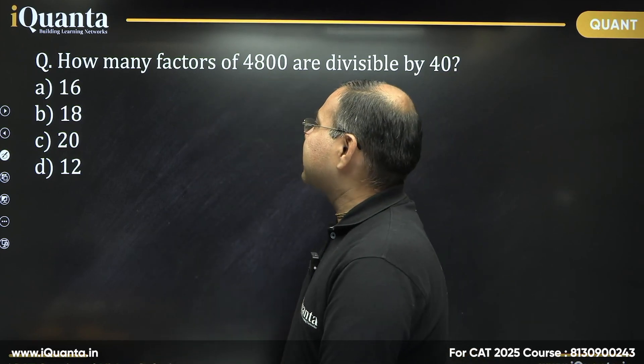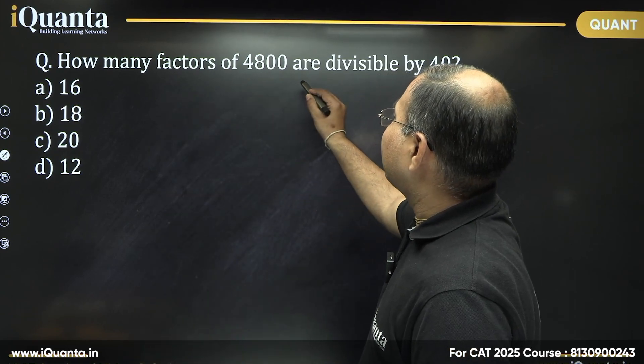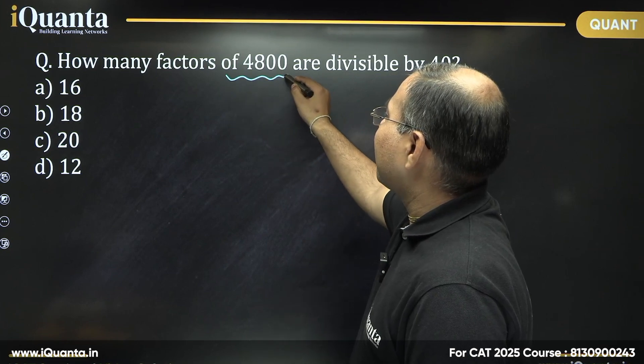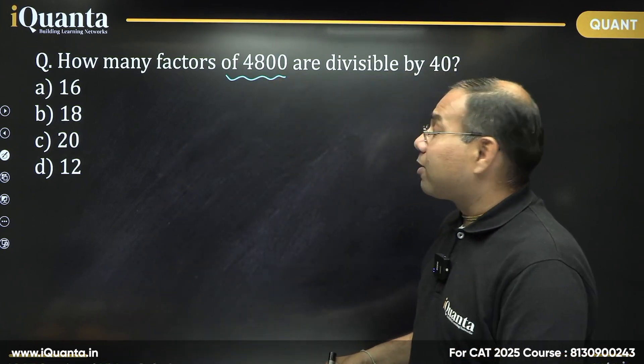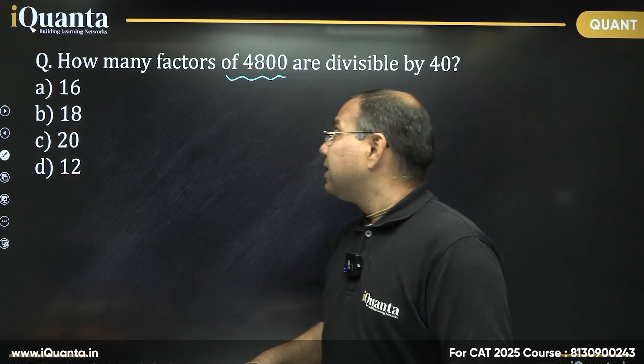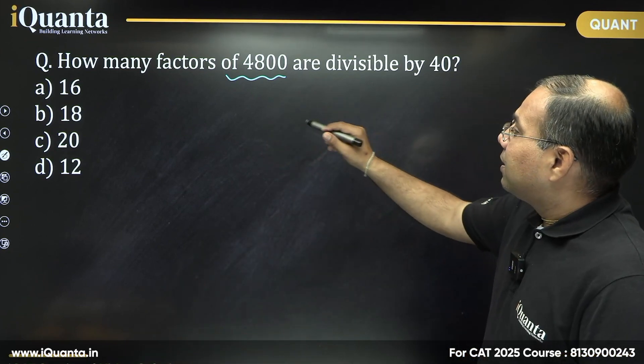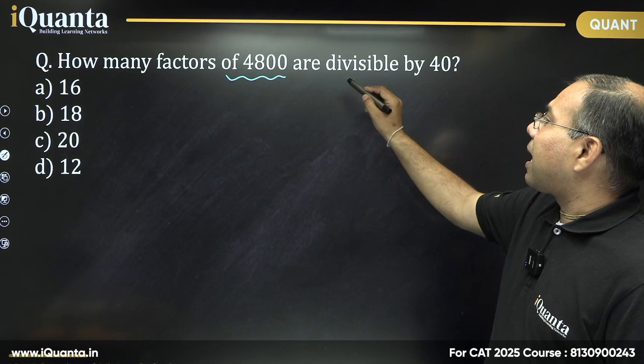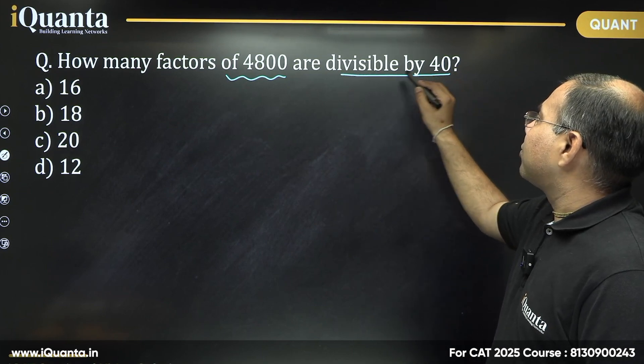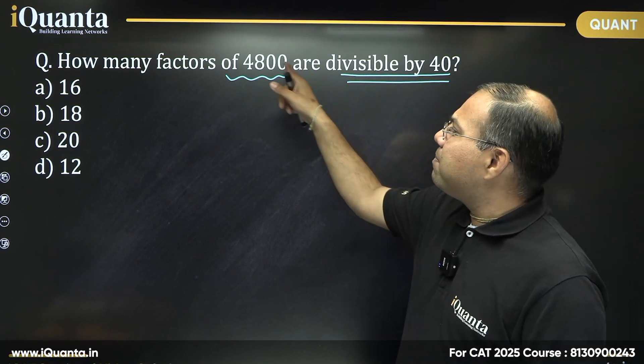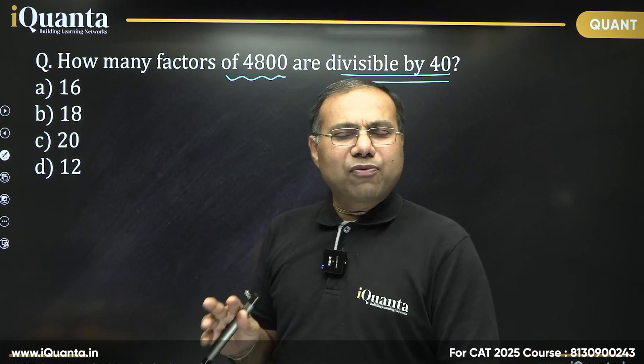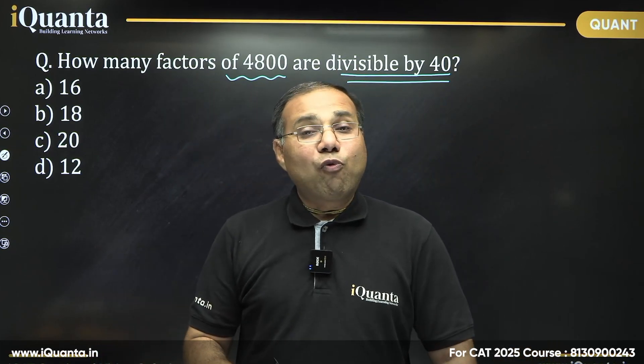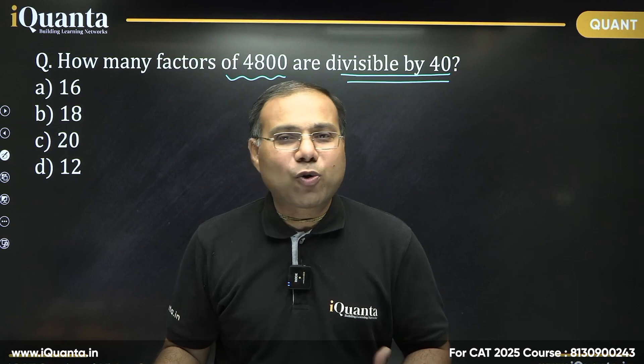Now let us read it together. It says, how many factors of 4800? So, 4800 factors and all of you know that for that we need to factorize the number, right? But there is some condition. How many factors of 4800 are divisible by 40? See, sometimes students miss the extra condition. We need to be very familiar, very clear with that. What is written in the question? What is being asked in the question?